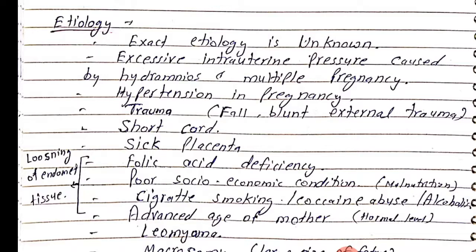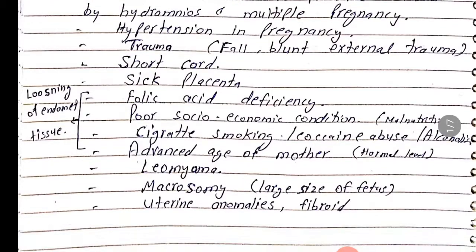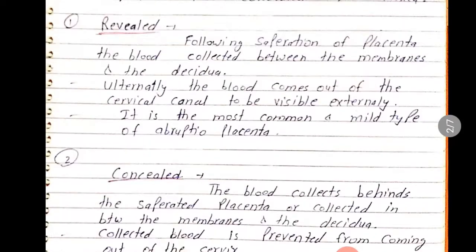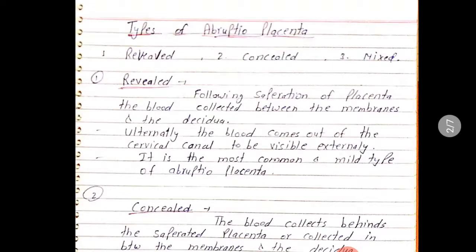Cocaine abuse and alcoholism can also reduce circulation, leading to placental detachment. Advanced age of the mother (over a certain age) leads to hormonal imbalance and losing of endometrial tissue. Leiomyoma, large size of fetus, uterine anomalies, fibroids, and infection can also cause abruptio placenta.